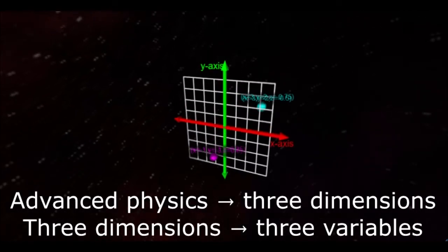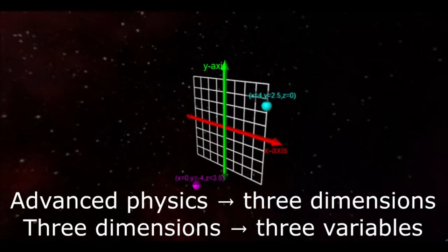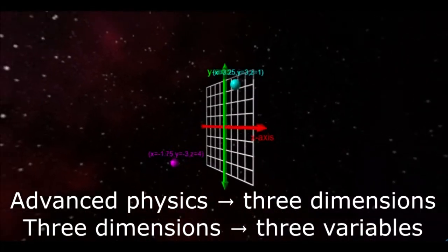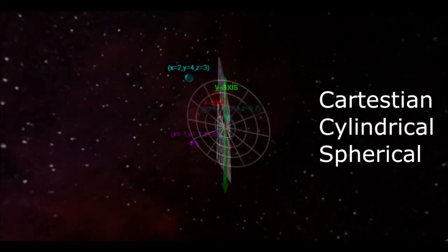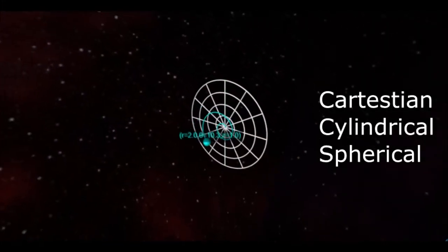When we upgrade to working in three dimensions, we need three variables to model whatever is happening in the problem. And we have three options for those variables: Cartesian coordinates, cylindrical coordinates, and spherical coordinates.